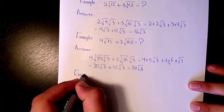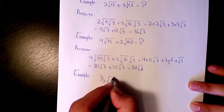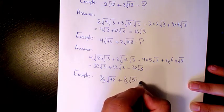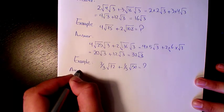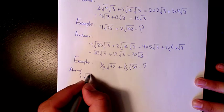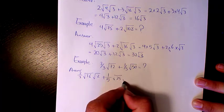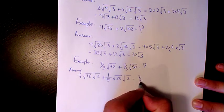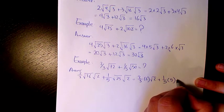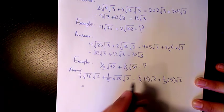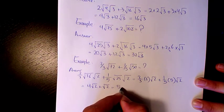Next example: I have 2/3√72 + 1/5√50. √72 is 36 × 2, √50 is 25 × 2. 2/3, √36 is 6, √25 is 5. That makes it 12 divided by 3 is 4√2, and here we have 1√2 is going to be 5√2.